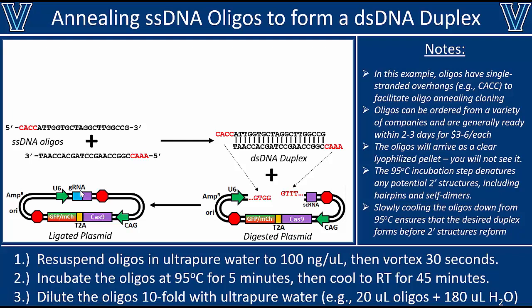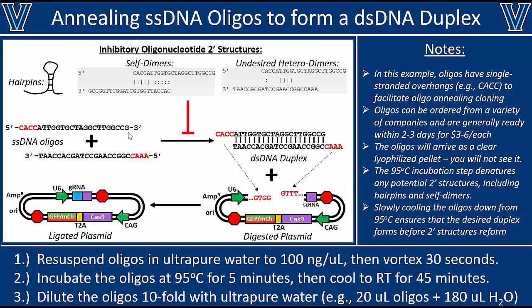However, sometimes the situation is more complex, because these single-stranded DNA oligos that we order — never forget that while we draw them as simple linear molecules — they can form other secondary structures as well. Some of those secondary structures might actually be inhibitory, preventing the formation of our desired duplex. For example, a given oligo might actually form a hairpin, and if it's binding to itself, it wouldn't bind to the other oligo.